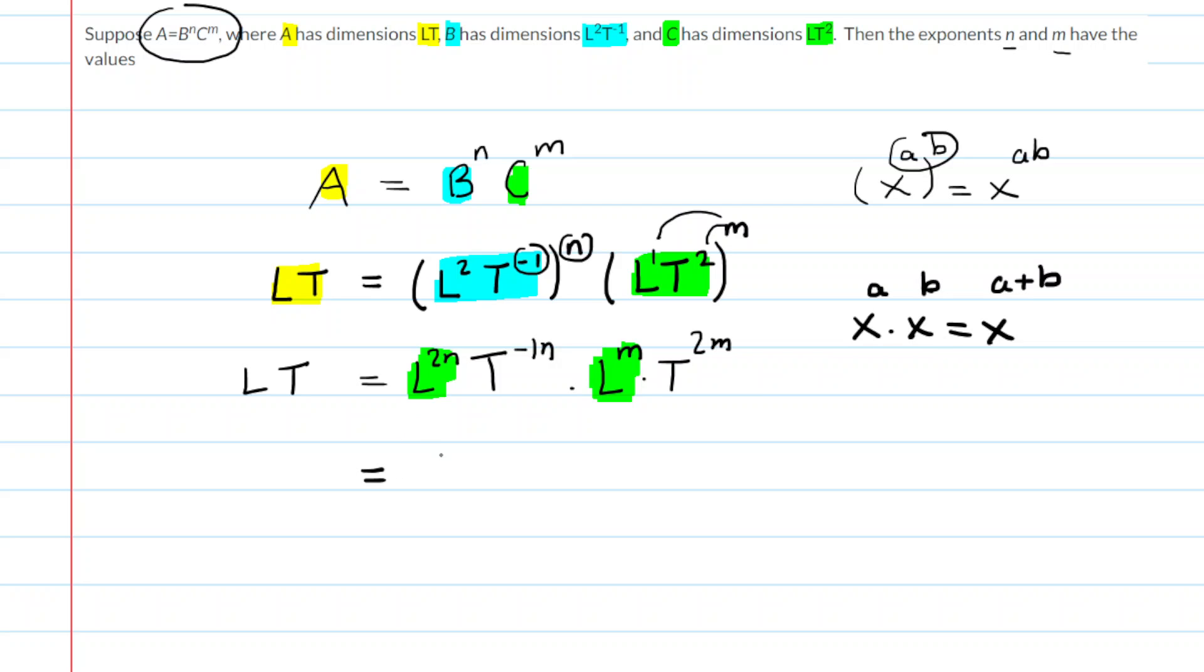So on the right hand side with this l term, you're going to end up with l and then you're going to add the 2n and the m. So you end up with a power of 2n plus m. And then we're going to do something very similar with the t term. We're going to add those exponents. So you're going to have t and then the power will be negative 1n plus 2m.